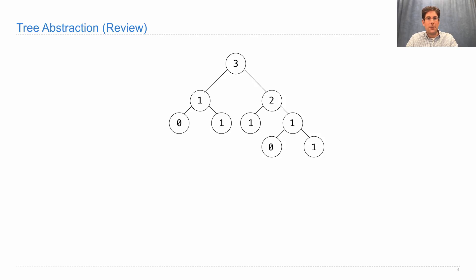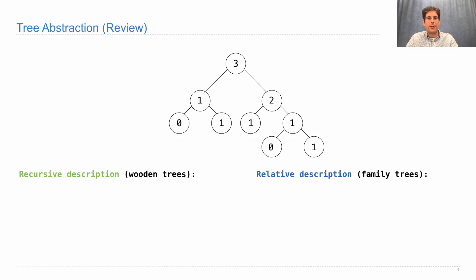Recall that we have two sets of vocabulary to describe the same abstraction. The recursive description uses an analogy to wooden trees, and then there's a relative description which uses family trees.